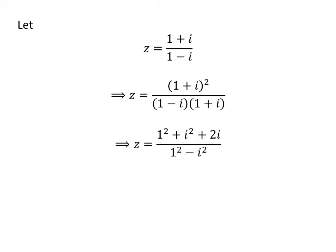Let us expand (1 + i)². The numerator becomes 1² + i² + 2i. In the denominator, we have (1 - i)(1 + i) which equals 1² - i².